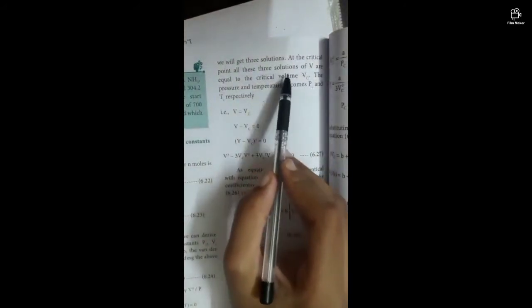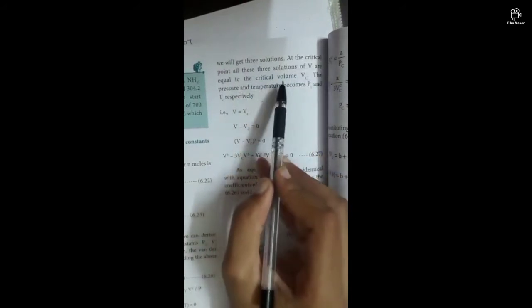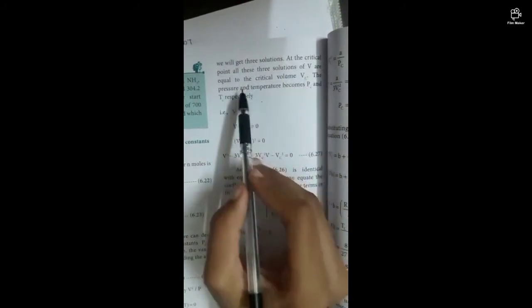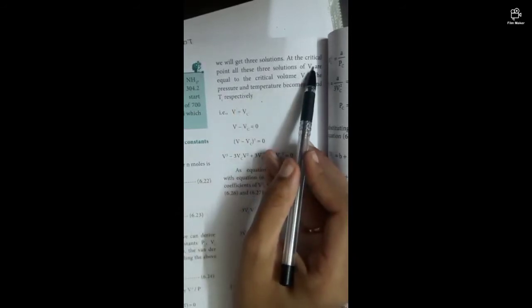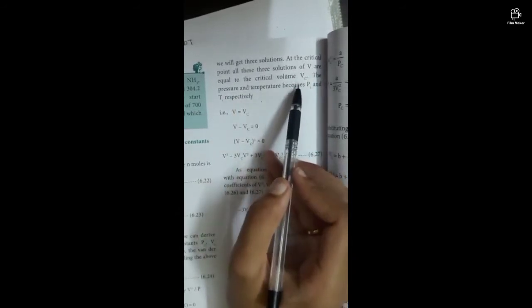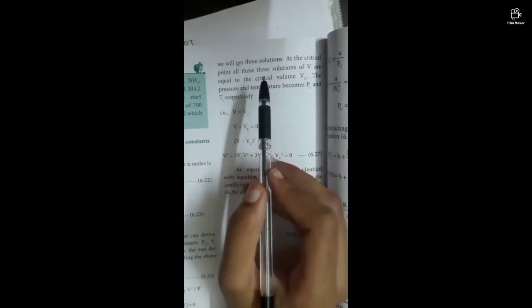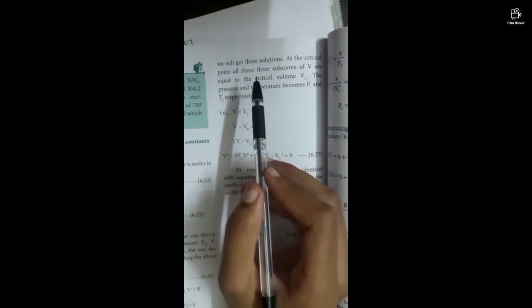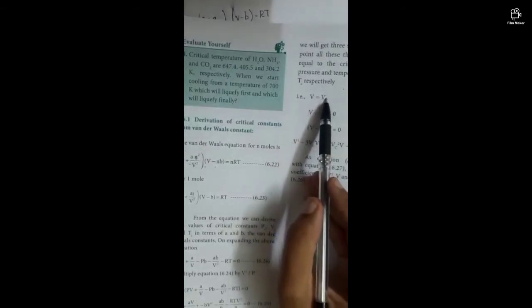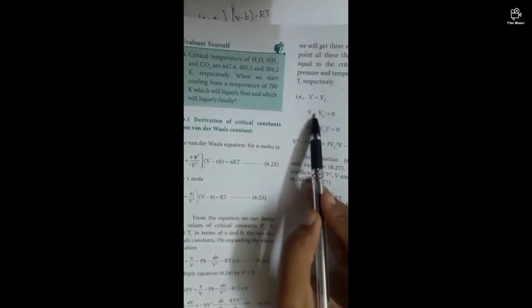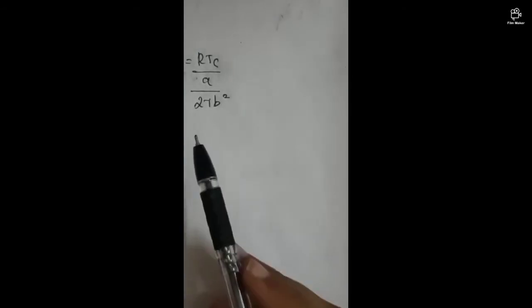At the critical point, all three solutions of v are equal to the critical volume Vc, and the pressure and temperature become Pc and Tc respectively. Therefore v = Vc, and (v - Vc)³ = 0, which we expand to obtain the critical condition equations.